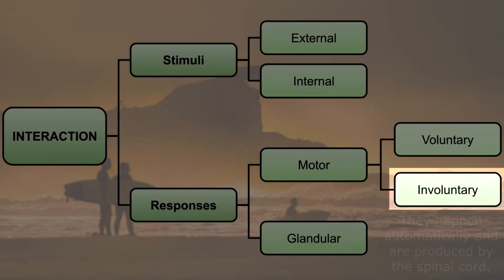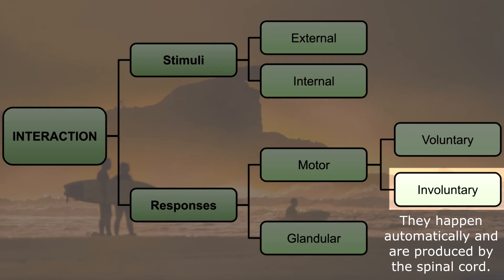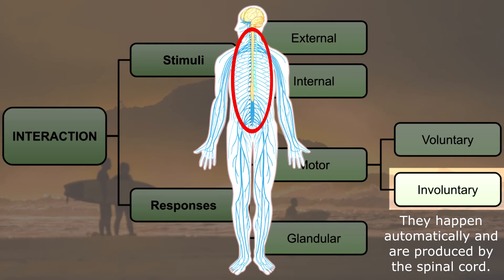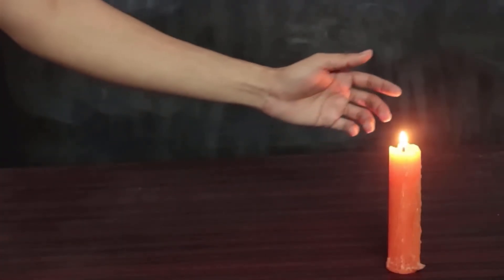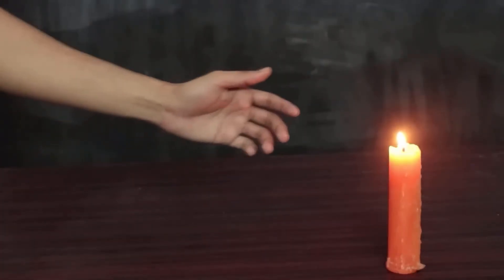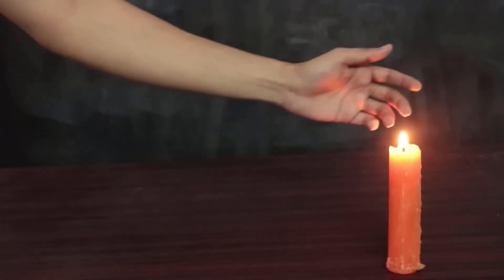Involuntary responses. These are movements that happen without you thinking about them. Your body reacts automatically and these are usually controlled by your spinal cord. A good example is when you accidentally touch something hot and your hand pulls away before you even realize it. This is called a reflex and your body does it to protect you. Another example is when someone pops a balloon near you — you are likely to scream, close your eyes and move your hands.